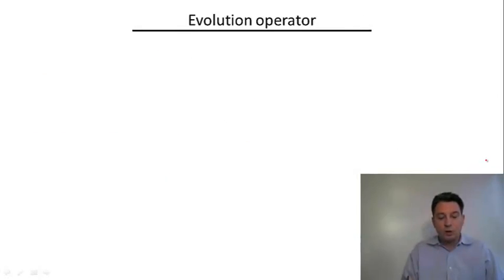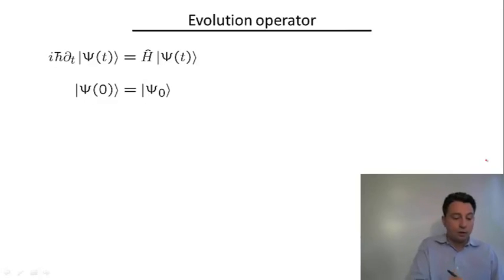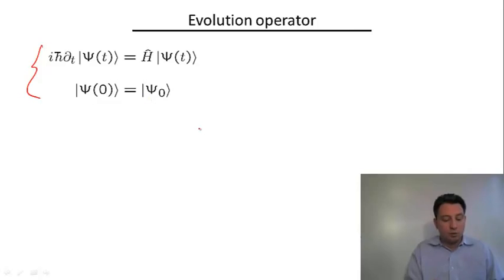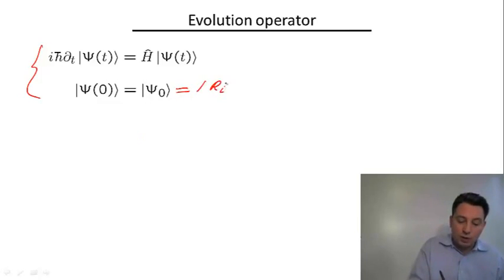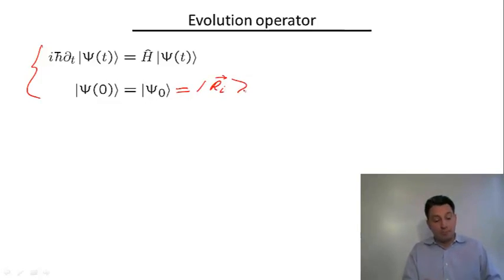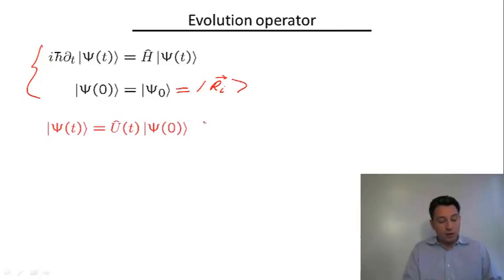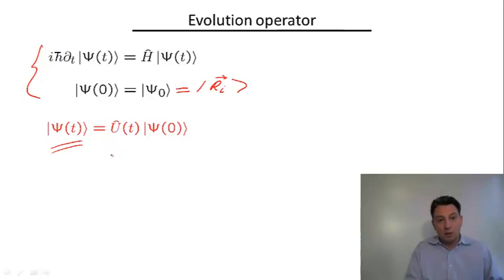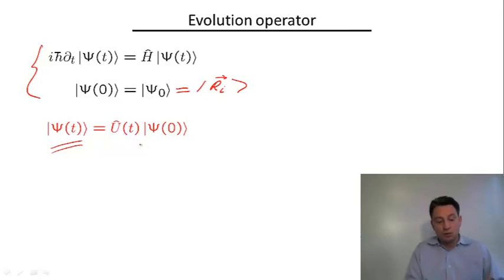We're interested in solving the general Schrodinger equation with some initial condition at t equals zero — we know the wave function at the initial moment of time. This is a completely general formulation. In our case, the initial condition is a localized wave packet near a certain point R sub i. The evolution operator formally relates the initial condition to the final wave function psi of t. Its action is, in some sense, a rotation from psi of zero to psi of t.